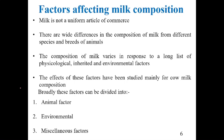Now coming to the major topic: factors which affect the milk composition. Milk is not a uniform article of commerce — its composition varies. There are wide differences in the composition of milk from different species and breeds. The composition varies in response to a long list of physiological, inherited, and environmental factors. These factors are divided into three categories: animal factors, environmental factors, and miscellaneous factors.